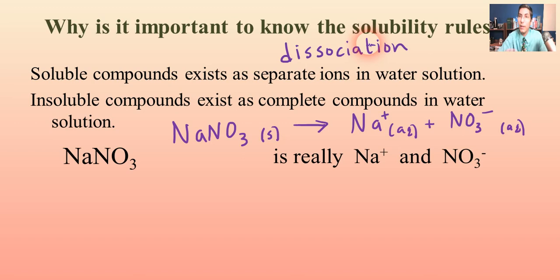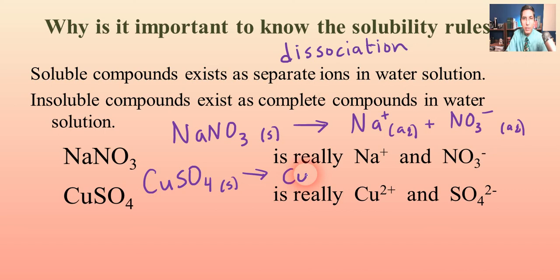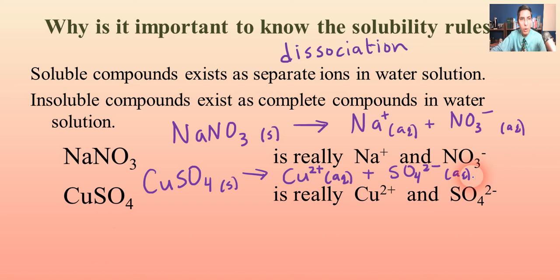Dissociation is what soluble ionic compounds do when dissolved in water — they dissociate, they break apart. That's important to know because in Lesson 11 we're going to do this a lot. If we have copper(II) sulfate, is that soluble? Yes — it's a sulfate and not one of the six exceptions, so it breaks apart. The equation for its dissociation: CuSO4 starts as a solid and breaks apart into Cu2+ (aq) and SO4 2− (aq) ions.